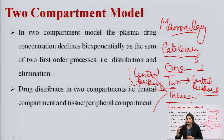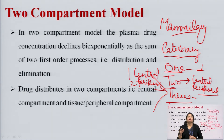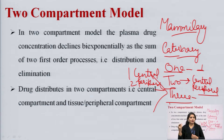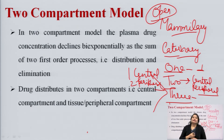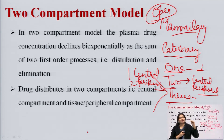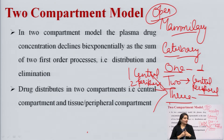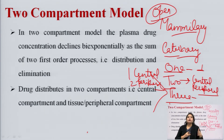The one compartment model has already been discussed in unit number 3. In this lecture, I will be discussing the two compartment open model IV bolus kinetics. The term 'open' designates that the movement of drug from one compartment to another is unidirectional — meaning the drug is entering the body and also leaving the body.